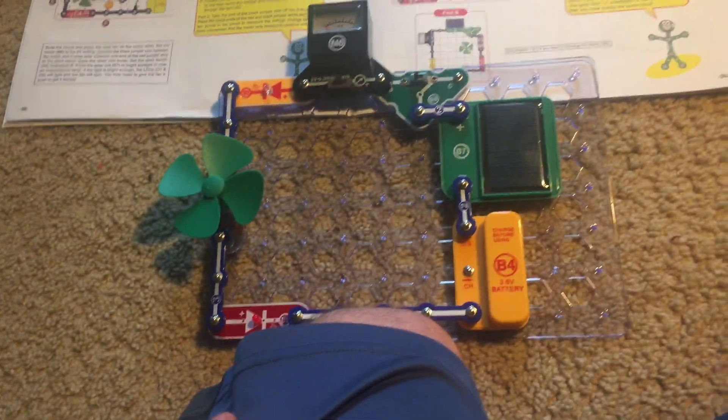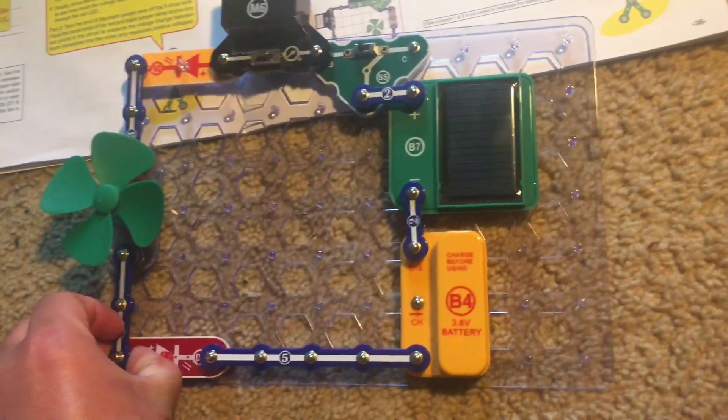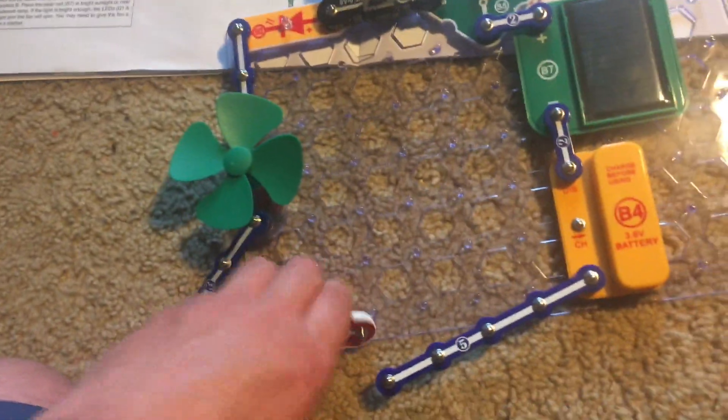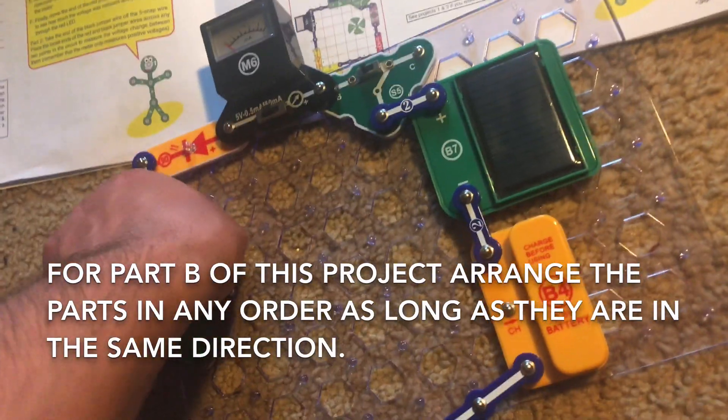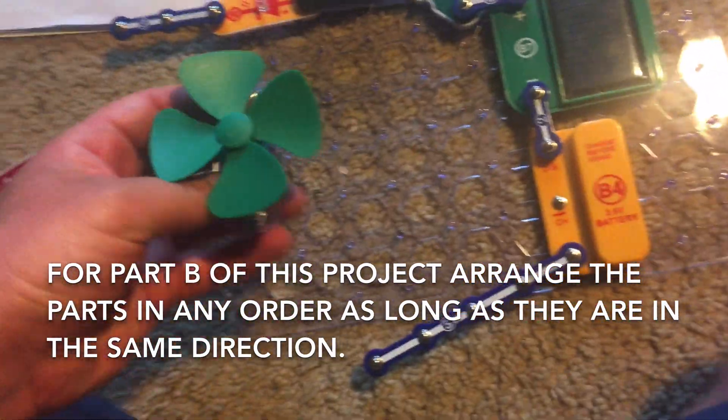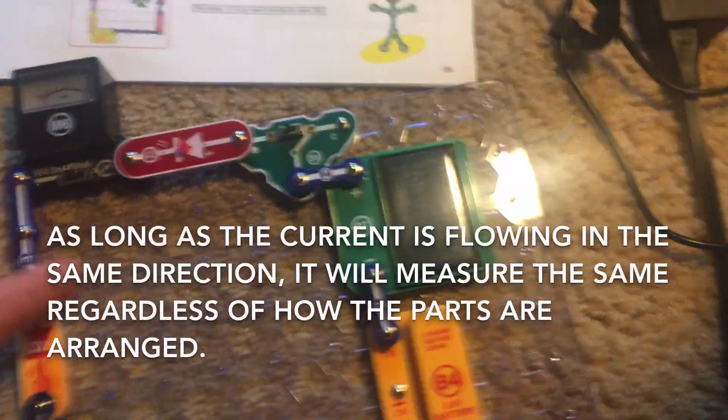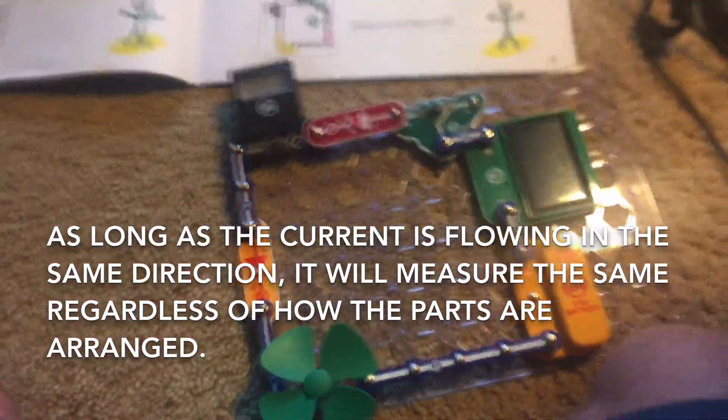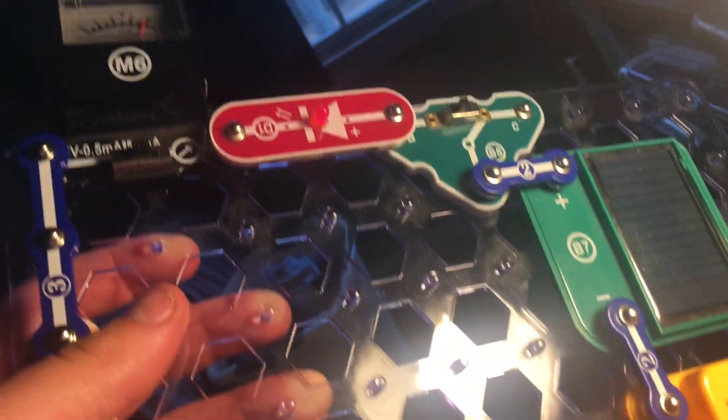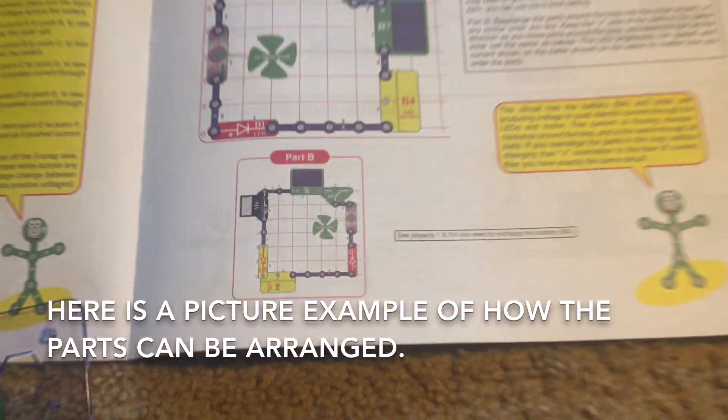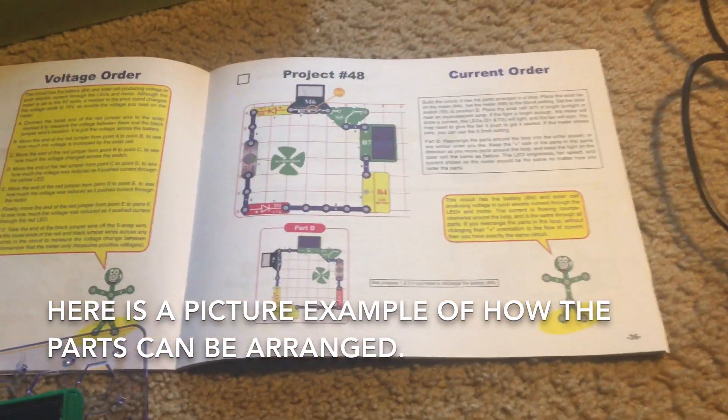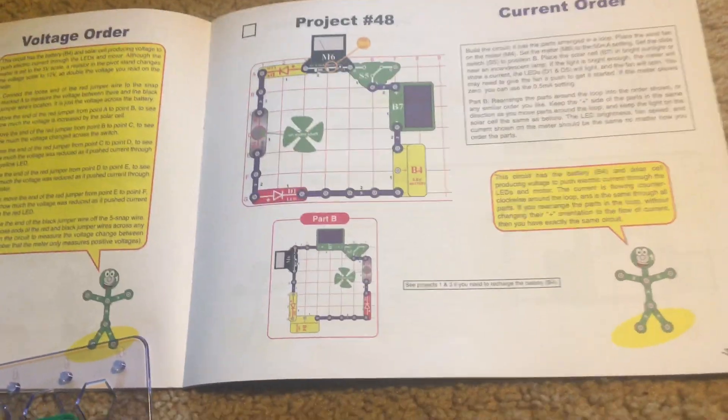Now, for part B of this project, you can arrange any of the components on the grid. As long as they are in the loop and that the components, the directions in which the current is flowing are the same. And this is to teach that regardless of how you arrange the parts, as long as the current is still flowing through them in the same direction, the current level will be the same. At least 0.4 milliamps. And this is an example of how the pieces can be arranged. I did not arrange them too much, but I just decided to show you one example.